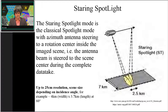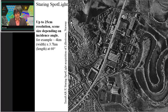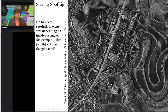Staring spotlight mode is a classical spotlight mode with azimuth antenna steering to a rotation center inside the image scene; the antenna beam is steered to the scene center during the complete data take. Comparing the staring spotlight image with the previous spotlight image shows clear enhancement in resolution: resolution is now 25 cm but the swath is only 4 km by 3.7 km.